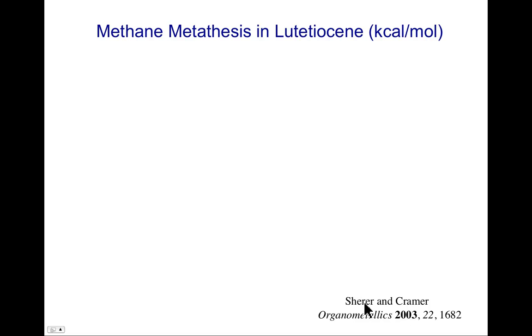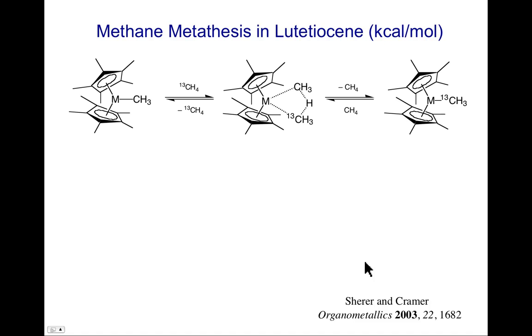So I promised I'd show an example maybe to try to make this more clear and when it's important. So this is out of my own labs with a former student, Ed Shearer. And it's looking at the metathesis of labeled methane with lutetium methyl lutetocene. And so if this is lutetium, this metal atom here, turns out the methyl can exchange with methane gas in the medium. And if you label the methane gas, you'll see you have this four-centered transition state as an incoming methane donates a hydride to an outgoing methyl that's becoming methane, and you just swap.